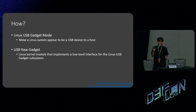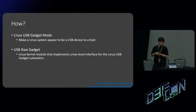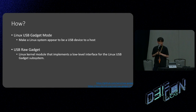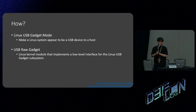If we put some files in that folder, the media player will get the files and play them. The second component is the USB raw gadget, which we also use for kernel fuzzing. It's a Linux kernel module that implements a low-level interface for the Linux USB gadget subsystem. Using the USB raw gadget, we can transmit arbitrary USB requests to the USB host. syzkaller already supports USB fuzzing using this raw gadget, so we can use syzkaller to fuzz USB kernel stacks in the cars.